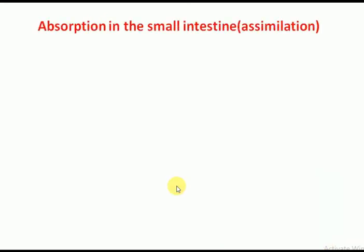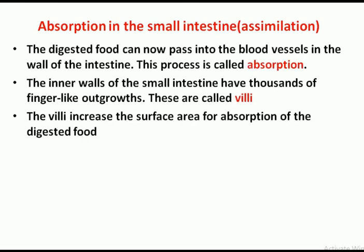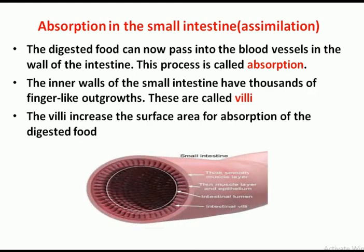Absorption occurs in the small intestine, where digested food passes into the blood vessels in the walls of the small intestine. This process is called absorption. The surface area of the small intestine increases to aid absorption of digested food.